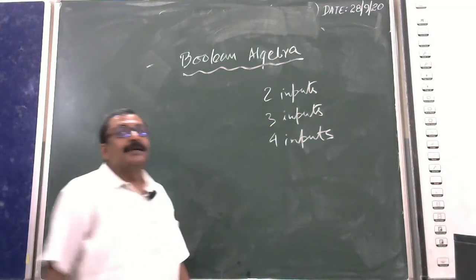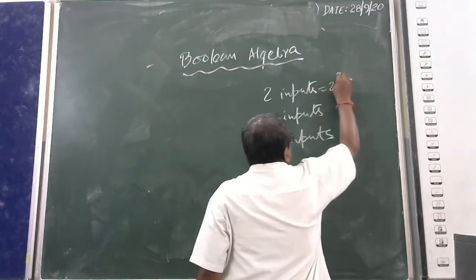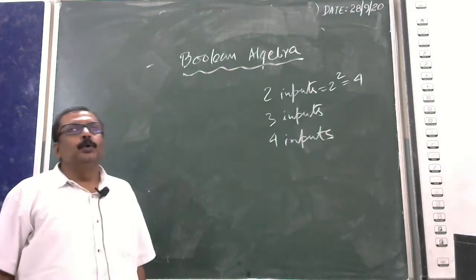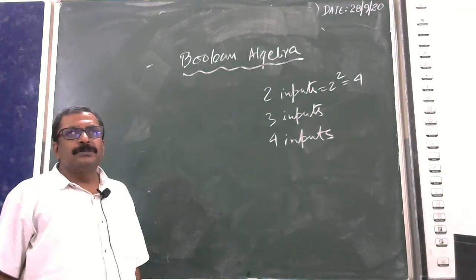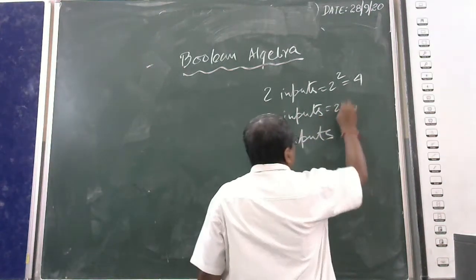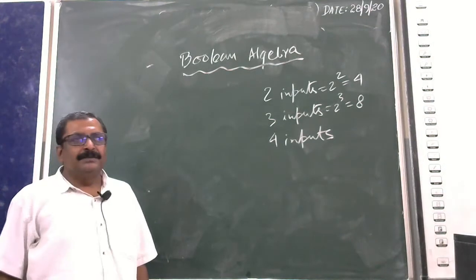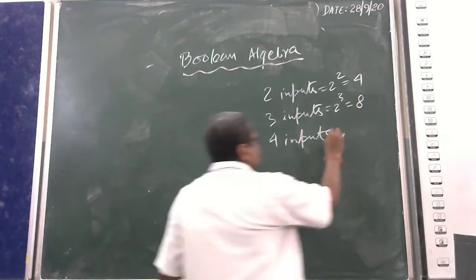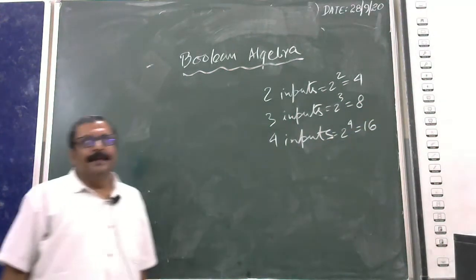When there are two inputs, the total combinations are 2 to the power 2, which equals four. For three inputs, 2 to the power 3 equals eight. For four inputs, 2 to the power 4 equals sixteen.